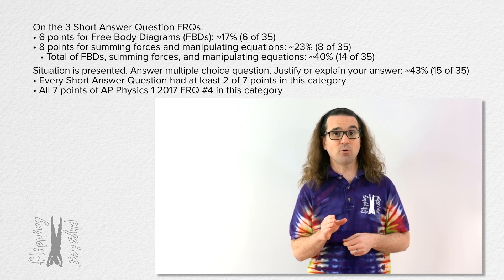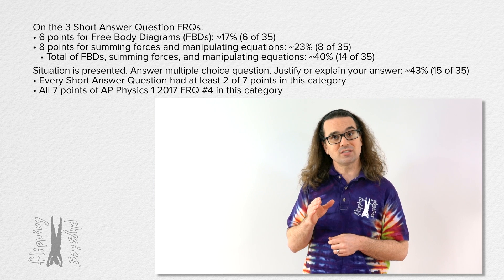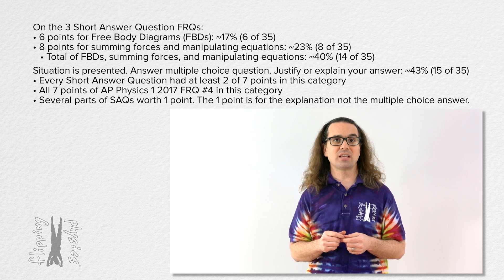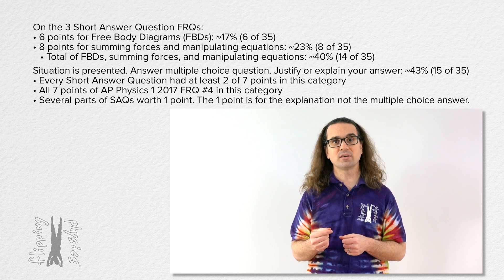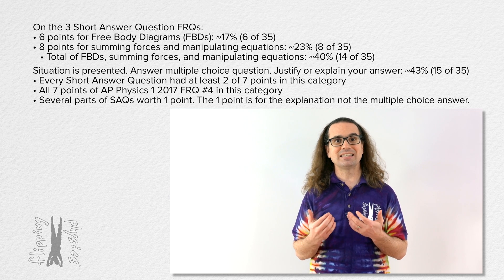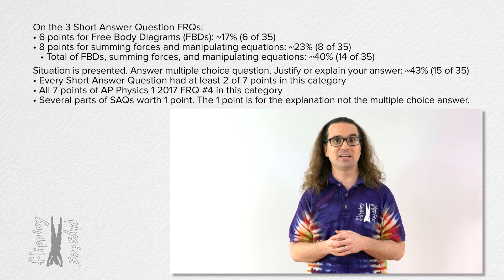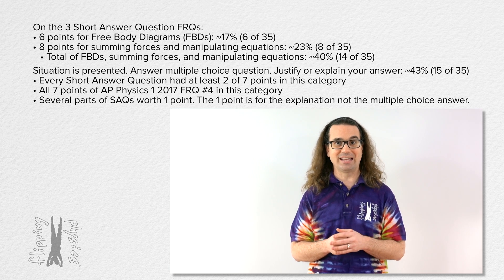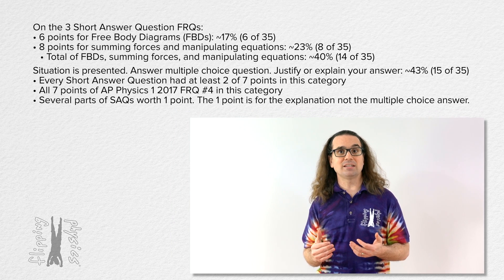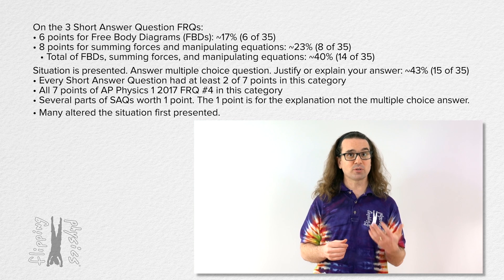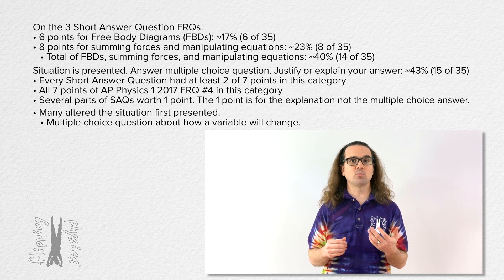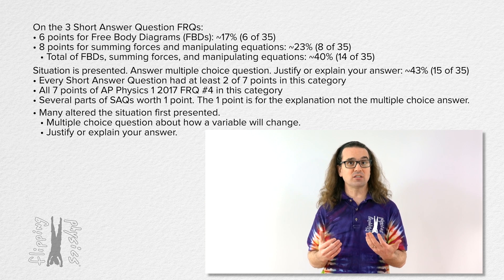Every one of the five short answer free response questions has at least two out of seven points for a multiple choice question and answer justification. In fact, all seven points of AP Physics 1 2017 number four fit in this category. And several free response questions have a part worth only one point which fits in this category, which means what really matters for these is your justification or explanation, not the multiple choice answer itself.